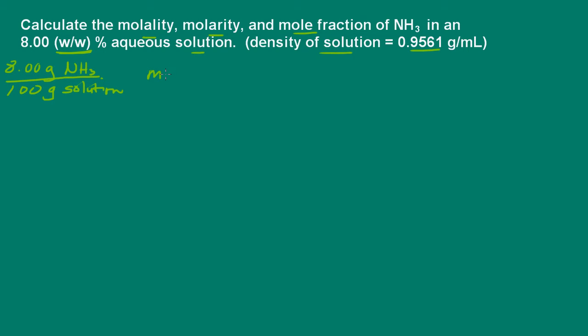Molality is given by moles of solute, in this case the ammonia, over the kilograms of solvent, so the water. And then molarity is moles of ammonia, or solute, over liters of solution. Remember, solution includes both solute and solvent.